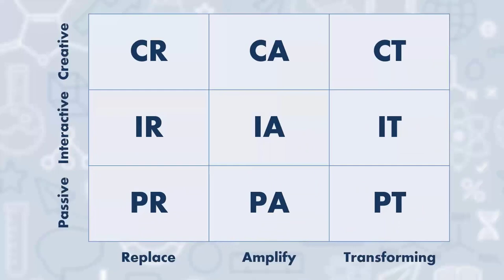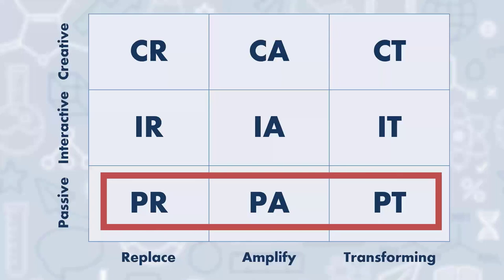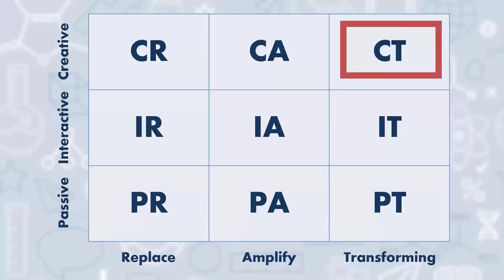We have this framework looking at passive, interactive, and creative, combined with replacing, amplifying, or transforming the classroom through technology. I want to mention that none of the squares on this three-by-three matrix are a bad way to teach. Sometimes it's good for learners to just be passive and listen. If you're watching this webinar, you're a passive learner — and that's not necessarily a bad thing. Also, if students are always engaging in creative and transformative activities, they may become overwhelmed or exhausted.